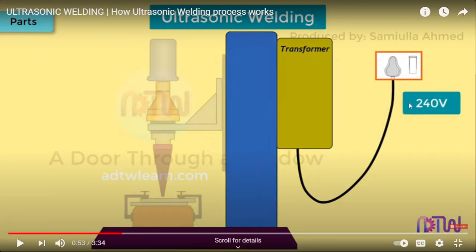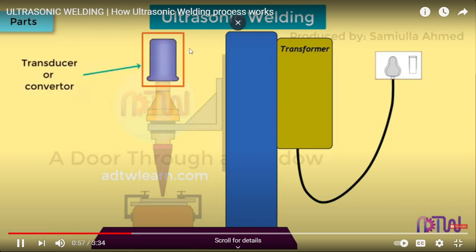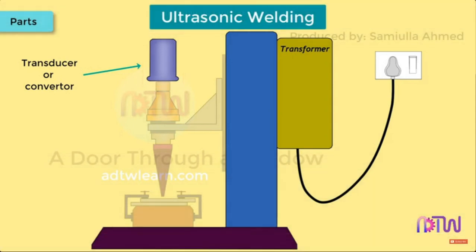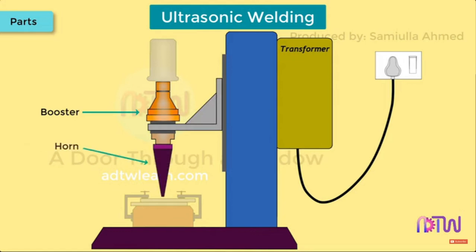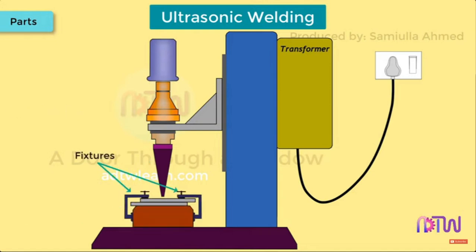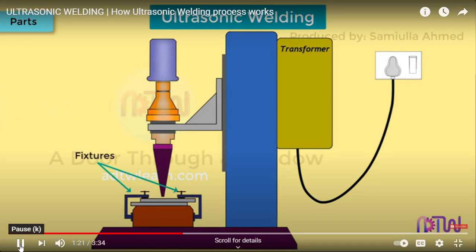Parts of the ultrasonic welding machine: the power supply required is 240 volts. The transducer or converter converts the high frequency electric signal into high frequency mechanical vibration using the piezoelectric effect. The booster amplifies the frequency and supplies it to the horn. The horn transmits vibrational energy to the work piece. Fixtures hold and clamp the two work pieces together.